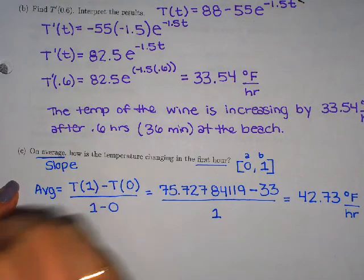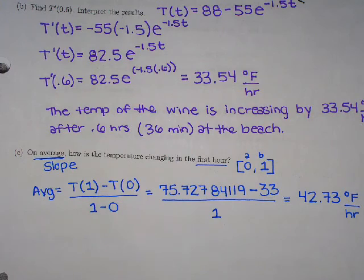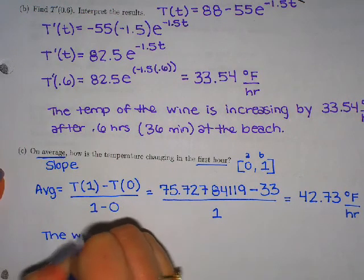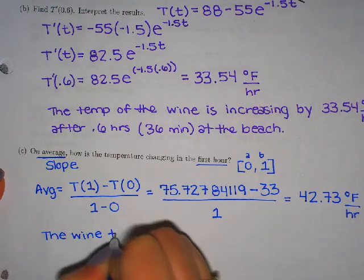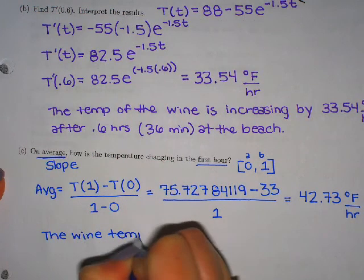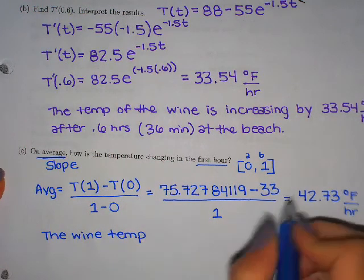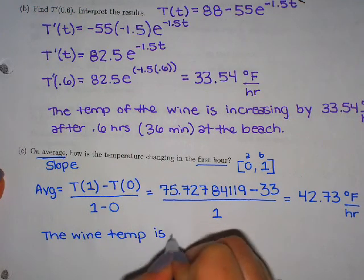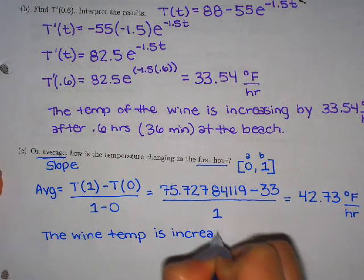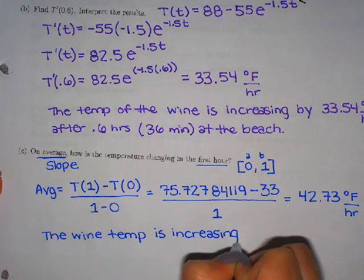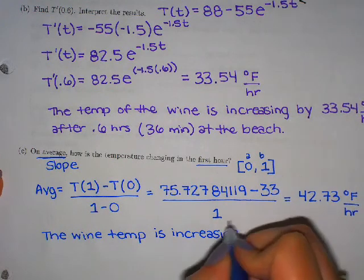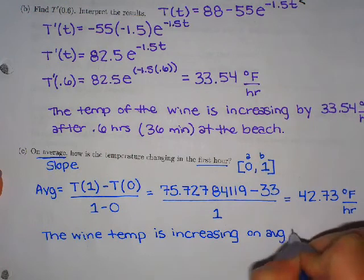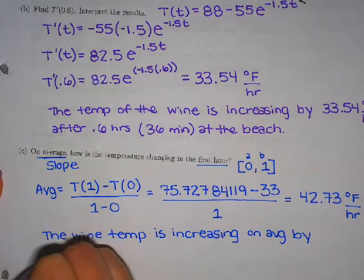So what's the average rate of change and we're going to interpret this. What's the average rate of change? The wine temperature is doing what? The wine temp is increasing or decreasing, is increasing because it's a positive number. Positive slope means increasing. The wine temp is increasing on average.